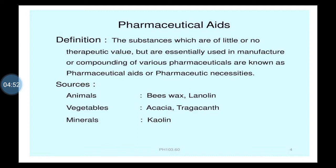The three important sources: animal source — beeswax you already know, then lanolin which is hydrous wool fat. Vegetable source — acacia and tragacanth. Mineral source — kaolin. And synthetic: you just need to know a few examples like boric acid and dextrose, though we are not going to cover any synthetic drug.